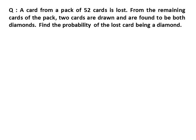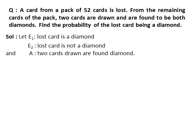Next question: a card from a pack of 52 cards is lost. From the remaining cards of the pack, two cards are drawn and are found to be both diamonds. Find the probability of the lost card being a diamond. Let E1 be the event that the lost card is a diamond, E2 be the event that the lost card is not a diamond, and A be the event that the two cards drawn are both diamonds. P(E1) = 13/52 = 1/4, and P(E2) = 39/52 = 3/4.